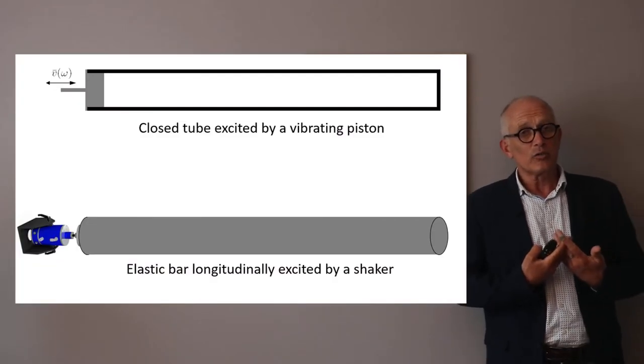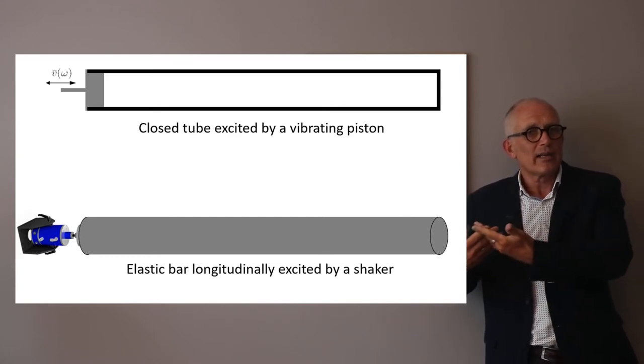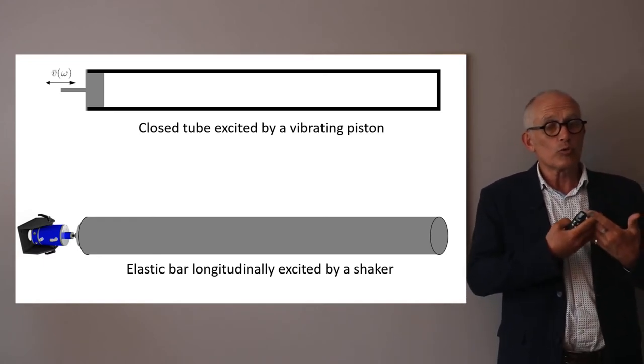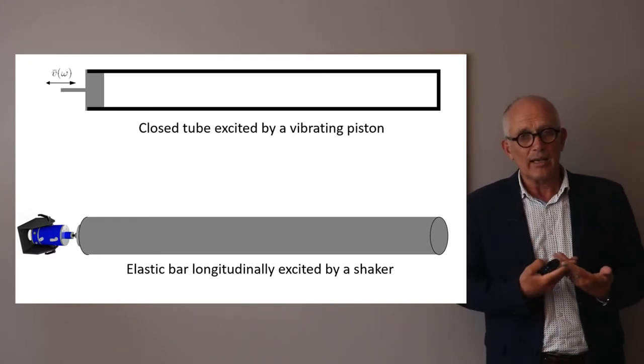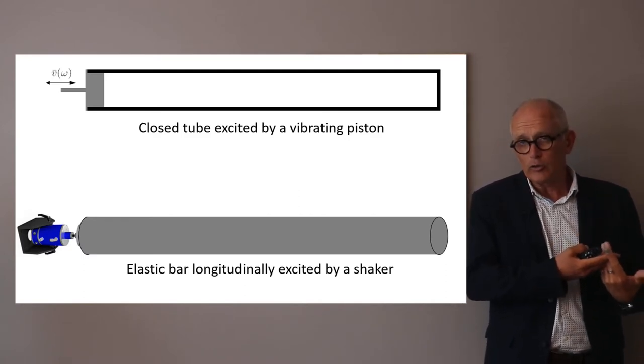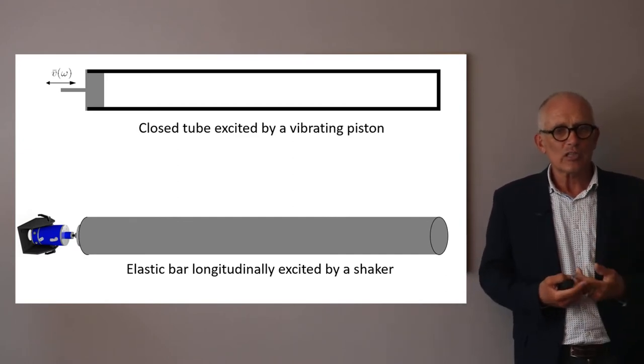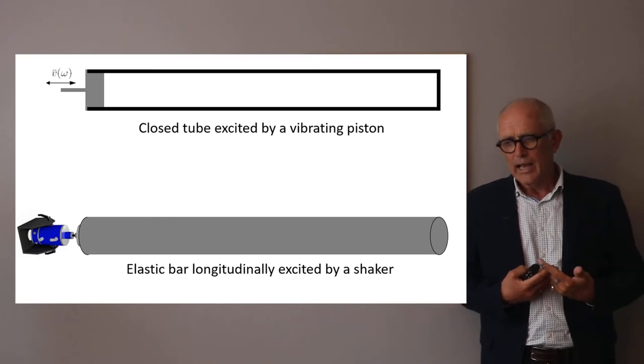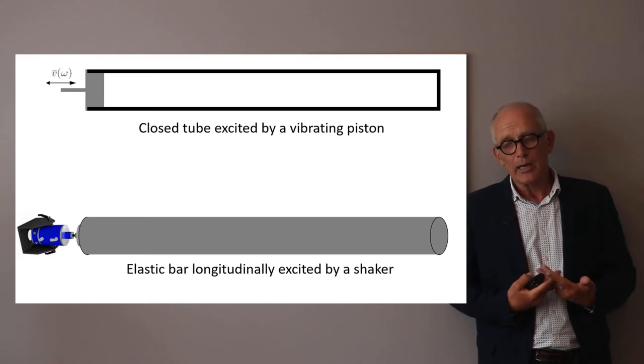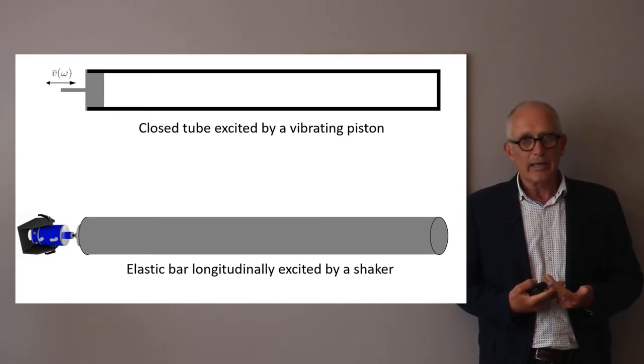We are going to analyze continuous systems. I will take one acoustic system and one dynamic mechanical system. The acoustic system is just a tube filled with air, closed on the far side, with a piston on the left side oscillating and creating a sound field inside the duct.